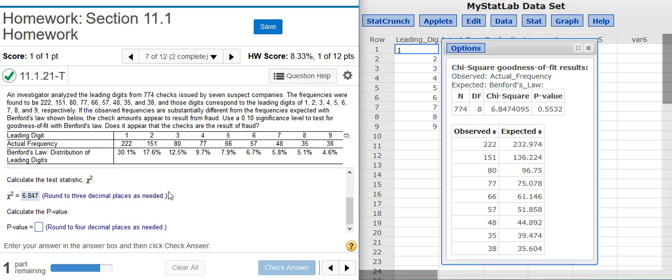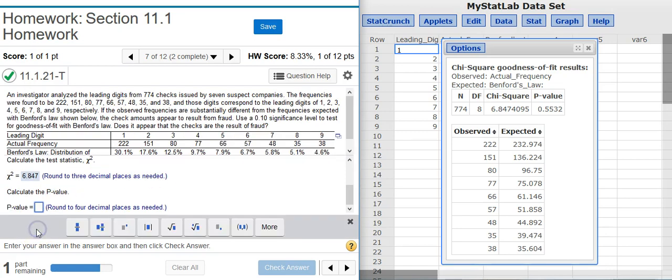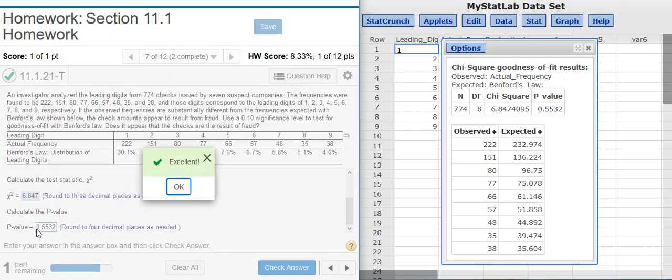And now the p-value, as always, in our results window right next door to the test statistic. Here we were asked to provide four decimal places, so again, that's what I will do. Excellent!